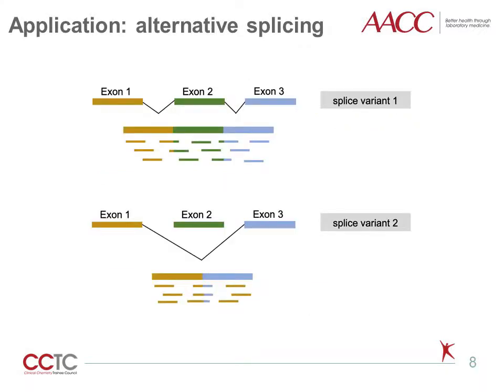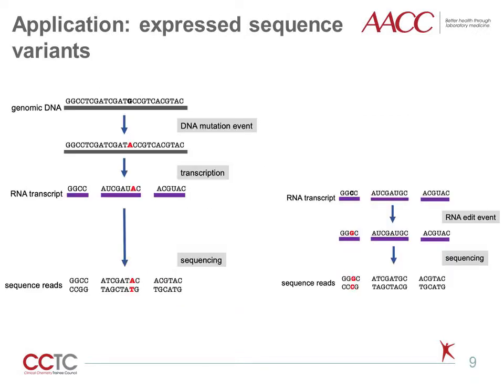RNA-Seq can be used for detection of alternative splice isoforms by identifying reads which span exons which are normally not spliced together. RNA-Seq also detects sequence variants which are expressed in the RNA transcript. These variants can arise in two different ways. Some variants occur through DNA mutation events in the genome and can then be expressed through RNA transcription. Other variants are not present in the genomic DNA because they occur through post-transcriptional RNA editing events.